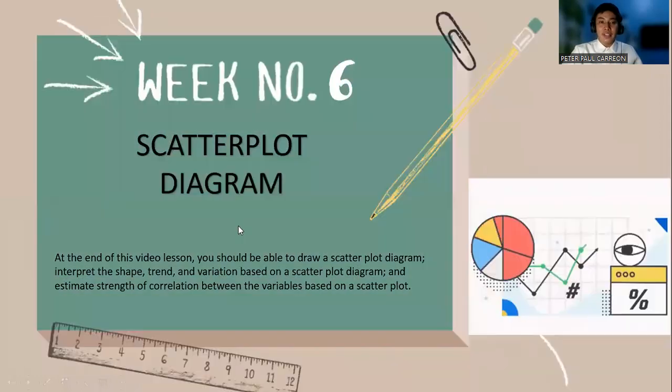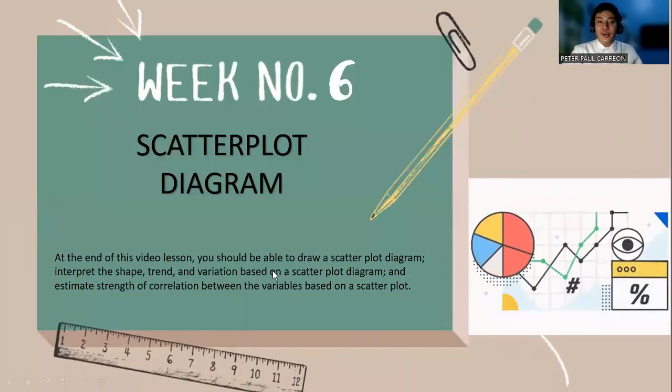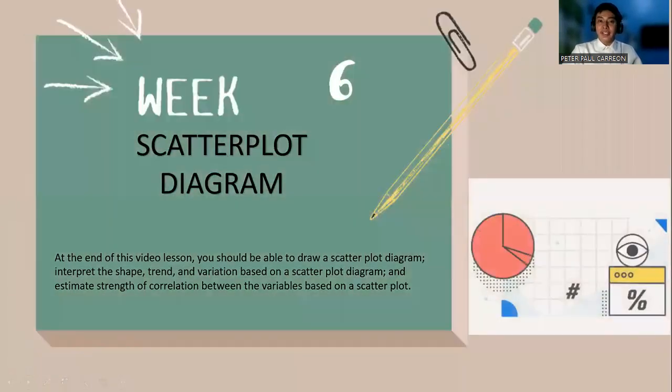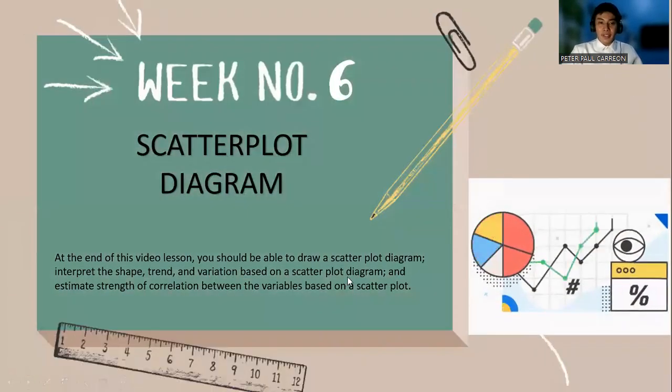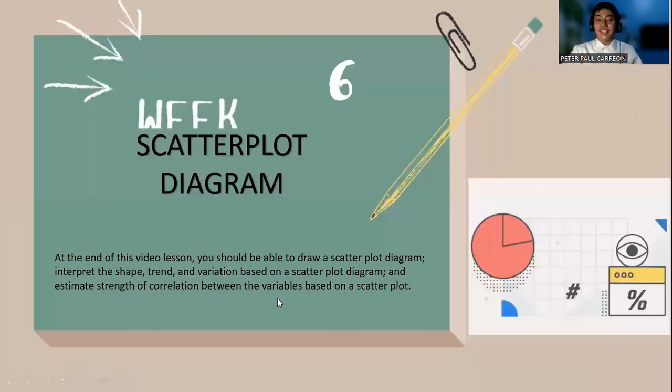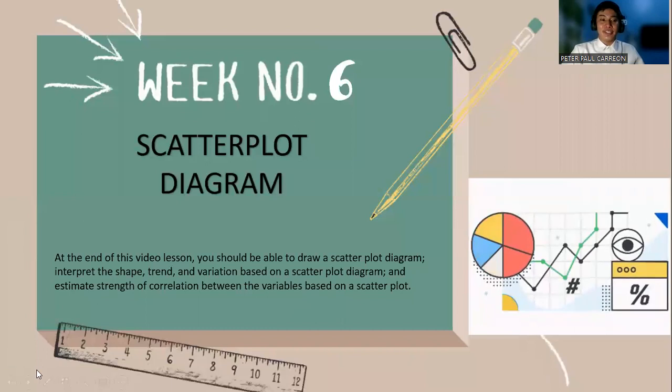So at the end of this video lesson, you should be able to draw a scatterplot diagram, interpret the shape, the trend, and variation based on the scatterplot diagram, and estimate the strength of correlation between the variables based on the scatterplot.